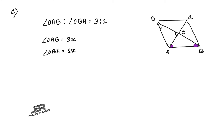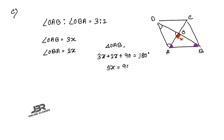In a rhombus, the two diagonals bisect each other perpendicularly, so angle AOB = 90°. Therefore 3x + 2x + 90 = 180 in triangle OAB. This gives 5x = 90, so x = 18°. Thus angle OAB = 3 × 18 = 54° and angle OBA = 2 × 18 = 36°.